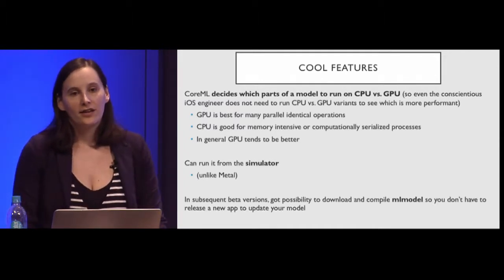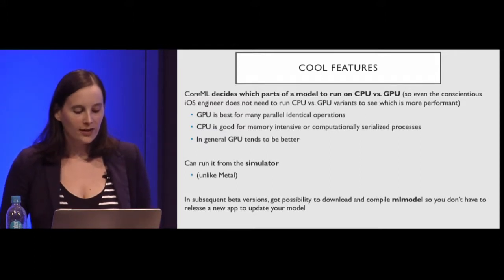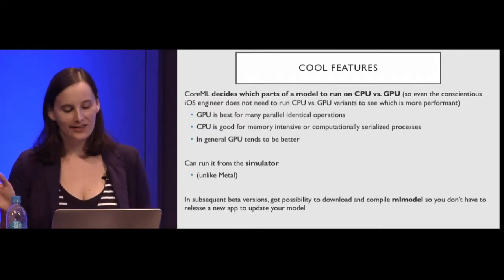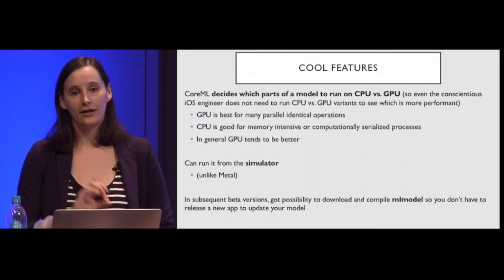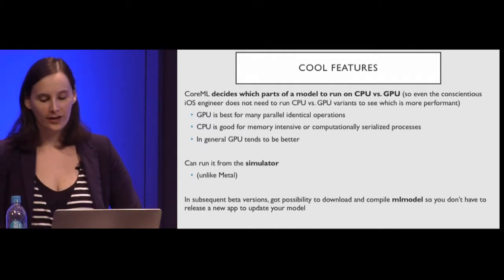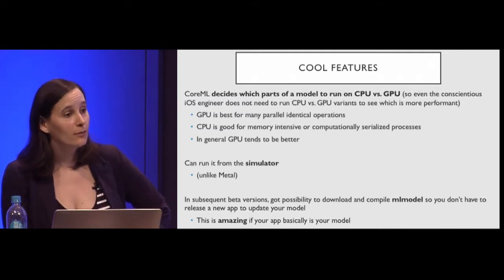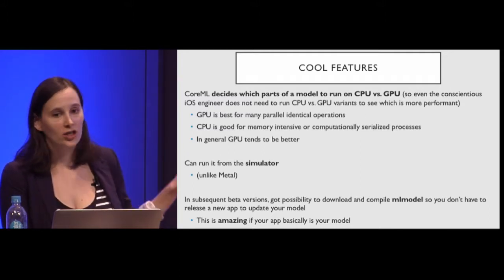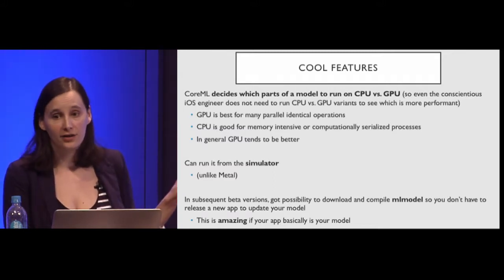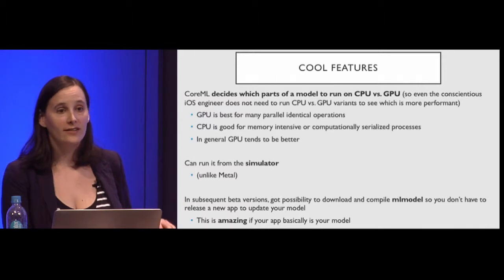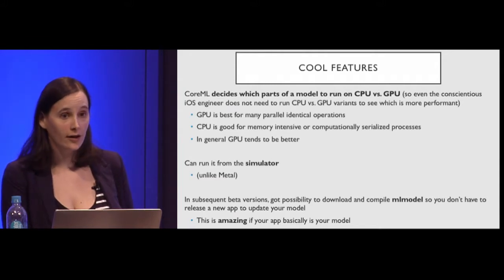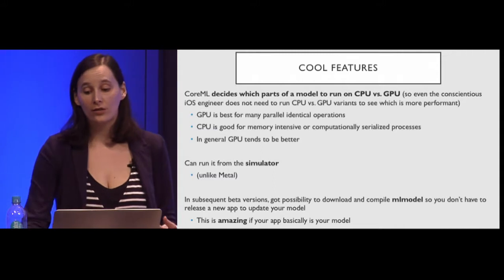New things are still coming in since the announcement. One really cool addition in a subsequent beta is the ability to download and compile machine learning models on the fly. If your app is basically your model — some bit of intelligence that's your product — and you find a bug, you no longer need to do a whole app release. You can make your app more intelligent or fix AI-related bugs on the fly by just initializing your new model with a URL.